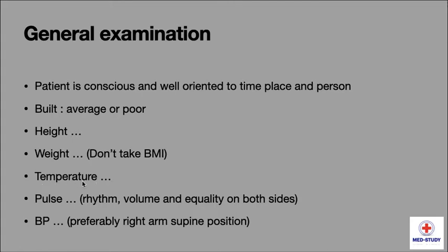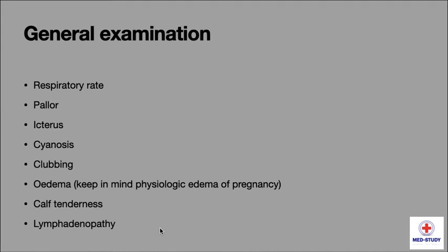Then we have to assess the temperature, pulse — including inner rhythm, volume and equality on both sides. We have to assess the blood pressure, preferably in the right arm supine position. Then comes respiratory rate.